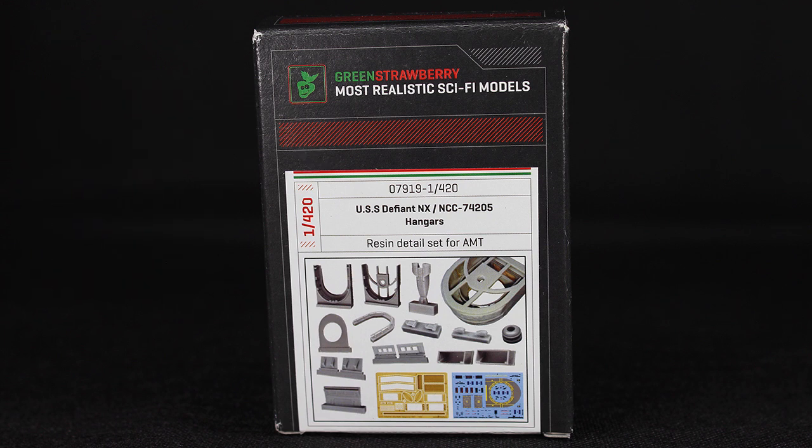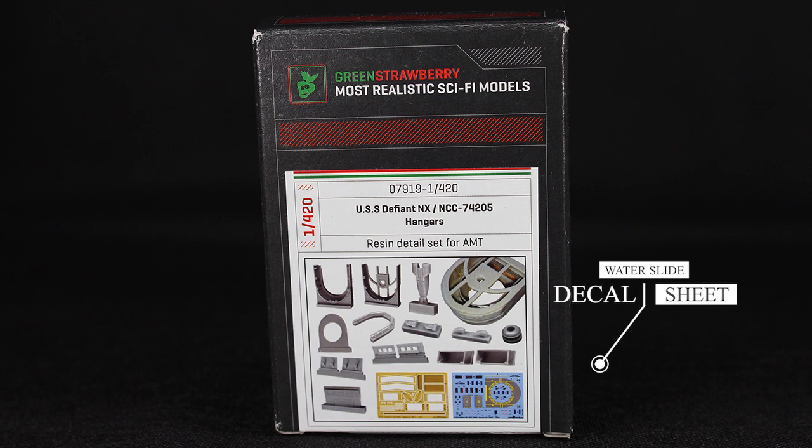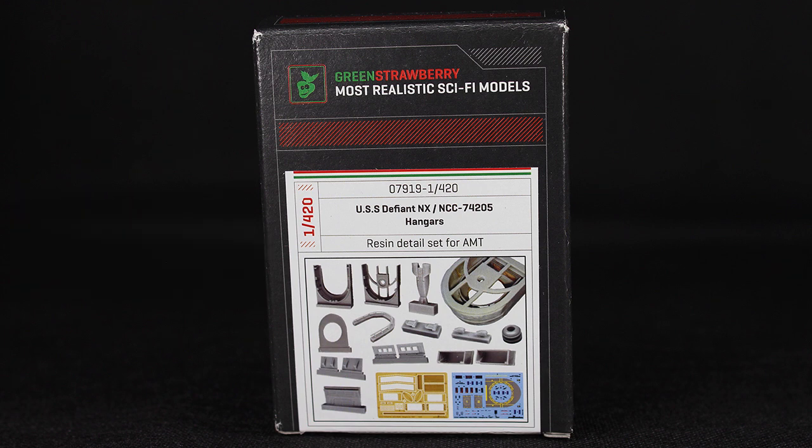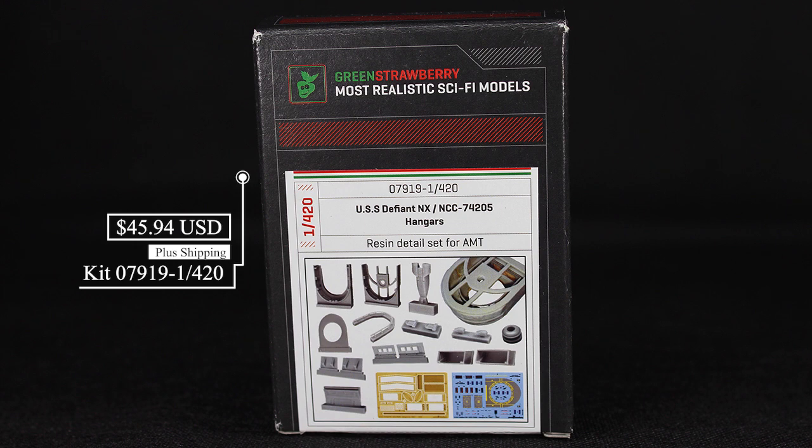The kit includes one instruction manual, one set of water slide decals, one sheet of photo etch, 15 pieces of resin. Resin craft include two worker bees, two type 18 and one type 10 shuttle, and the kit retails for $45.94 US plus shipping.